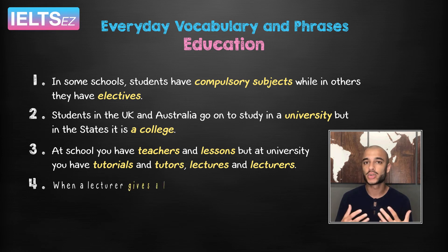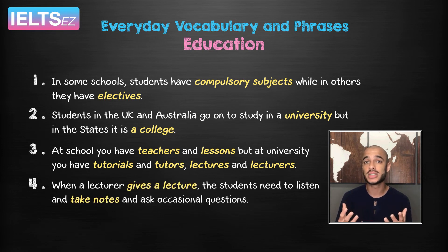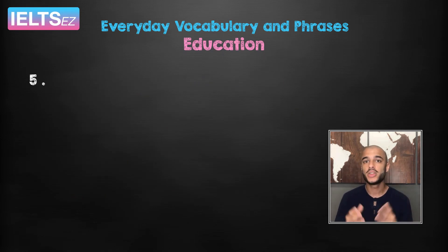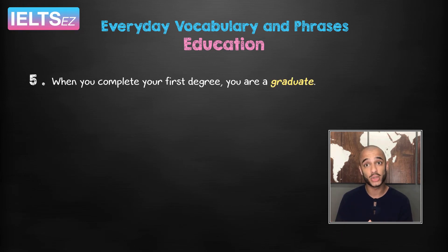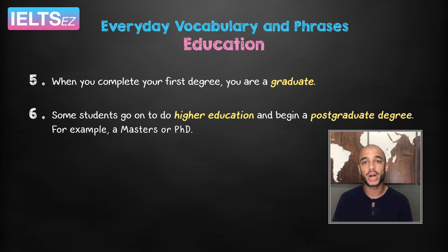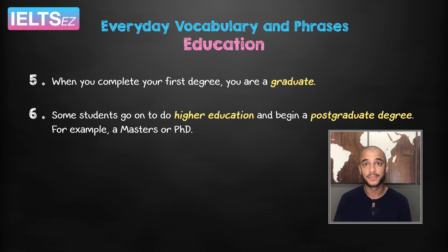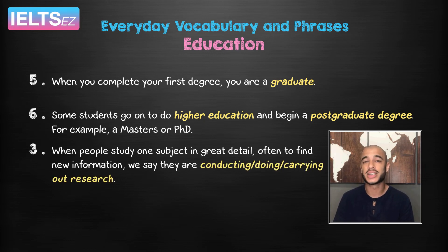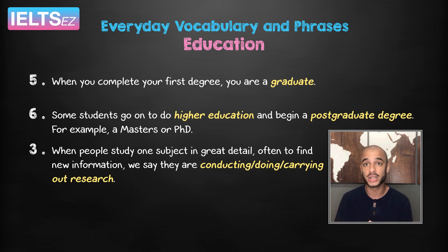Four: when a lecturer gives a lecture, the students need to listen and take notes and ask occasional questions. Five: when you complete your first degree, you are a graduate. Six: some students go on to do higher education and begin a postgraduate degree — for example, a Masters or PhD. Seven: when people study one subject in great detail, often to find new information, we say that they are conducting, doing, or carrying out research.